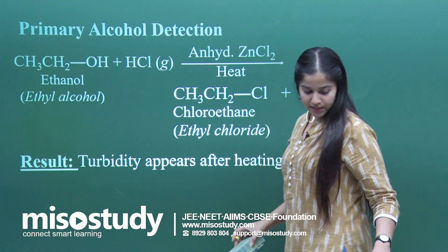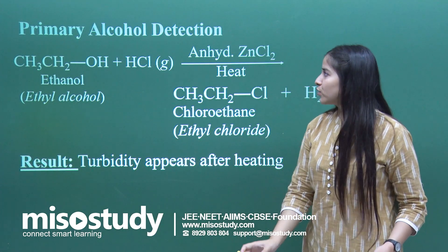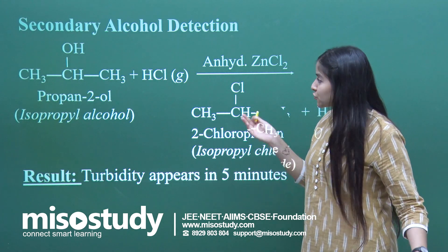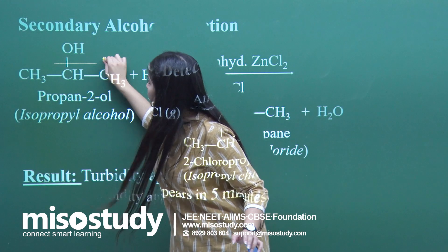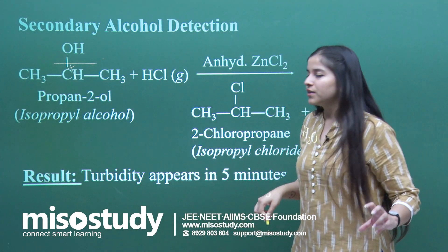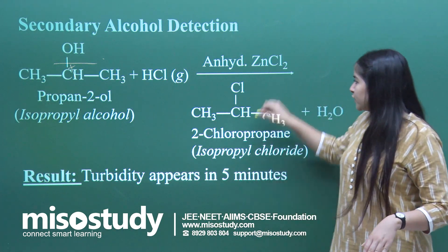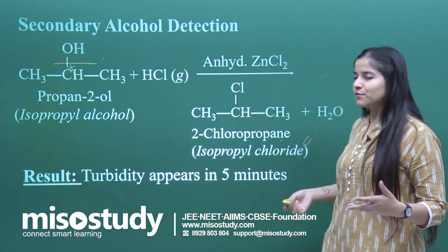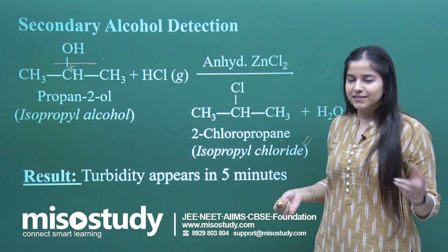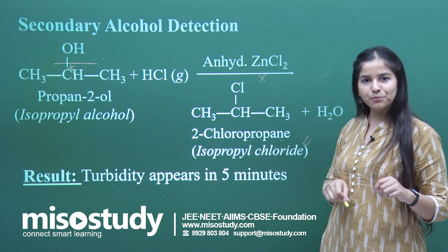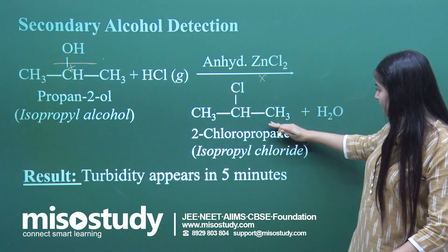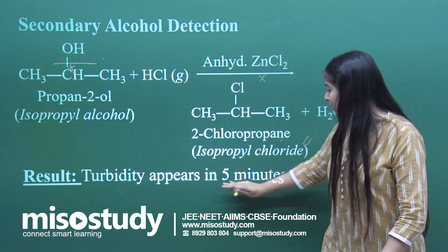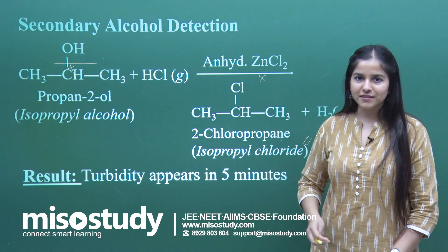Moving on to the secondary alcohol — secondary carbocation is a little more stable. So if this bond is cleaved, the secondary carbocation will form a little more quickly than the primary. The possibility of turbidity appearing is quicker — meaning no heat is needed. I got turbidity in just 5 minutes of the reaction.